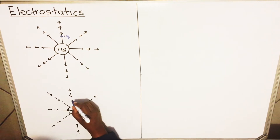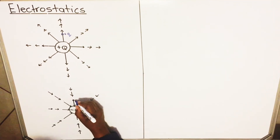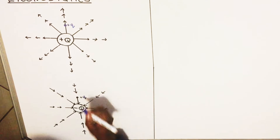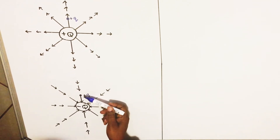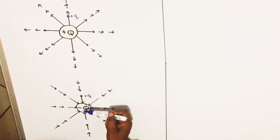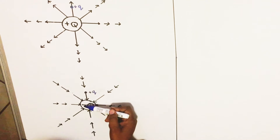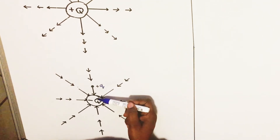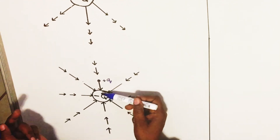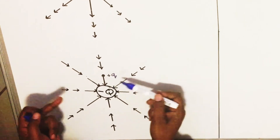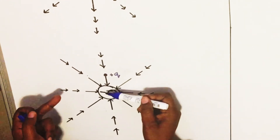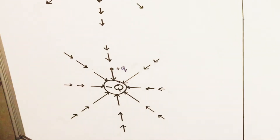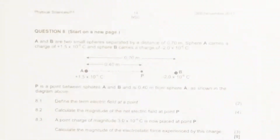For a negatively charged object, we still use a small positive test charge. Because the test charge is positive and the object is negatively charged, they attract each other, so the test charge moves towards the object. Therefore, electric field lines for a negatively charged object point towards that object.